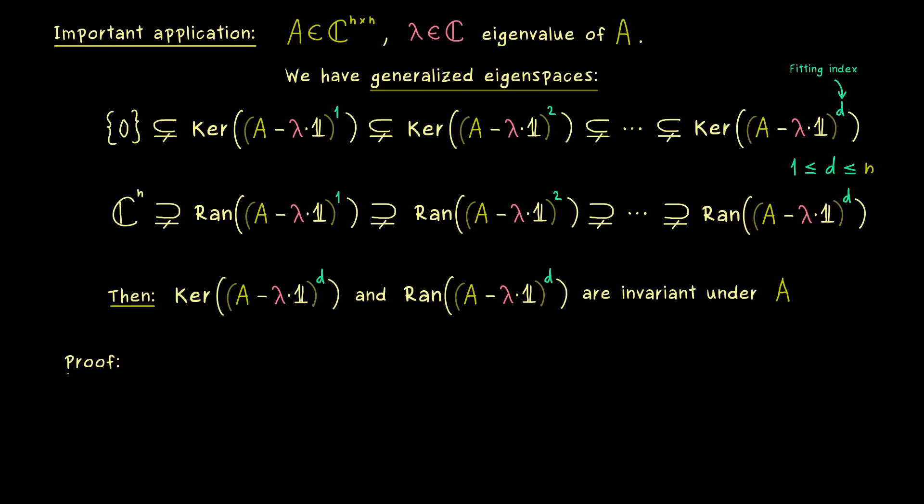And now, as you can see, obviously it might be easier to work with the matrix A minus lambda identity. But obviously, as you can see, this is not a big difference, because if we apply a vector x to this matrix, then we can split it up and we have A times x minus lambda times x.